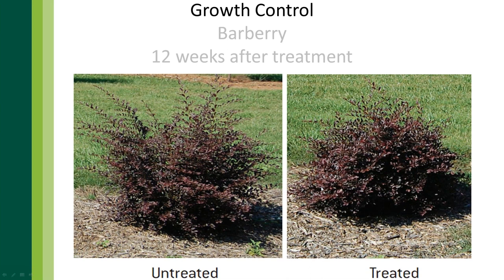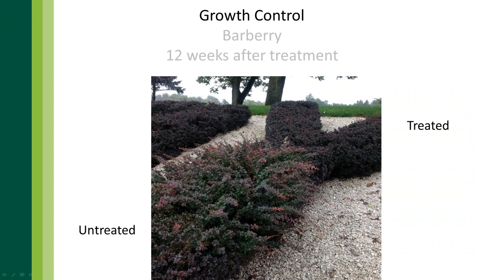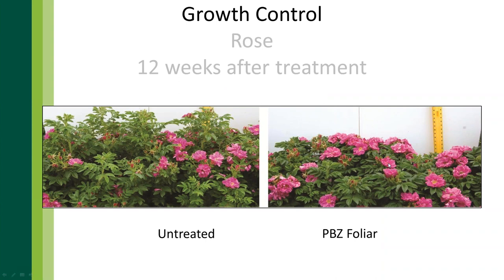This is eleagnus — many a landscape manager's nightmare, as they just grow like crazy constantly. Here we can see untreated eleagnus versus treated with one foliar application of TrimTech — pretty astounding results at eight weeks after treatment. Here is boxwood — you can see the line between the untreated and the treated at 18 weeks. Barberry — people love pruning barberry with all those thorns — here you can see the difference at 12 weeks. Even roses show clear growth control at 12 weeks after treatment.